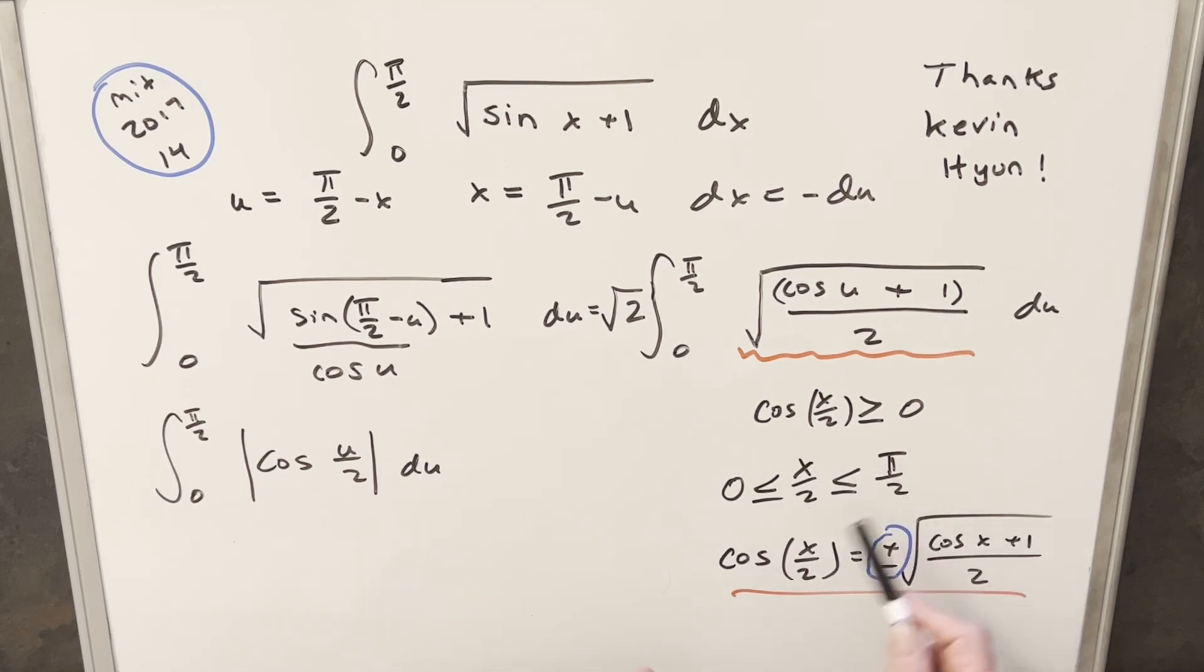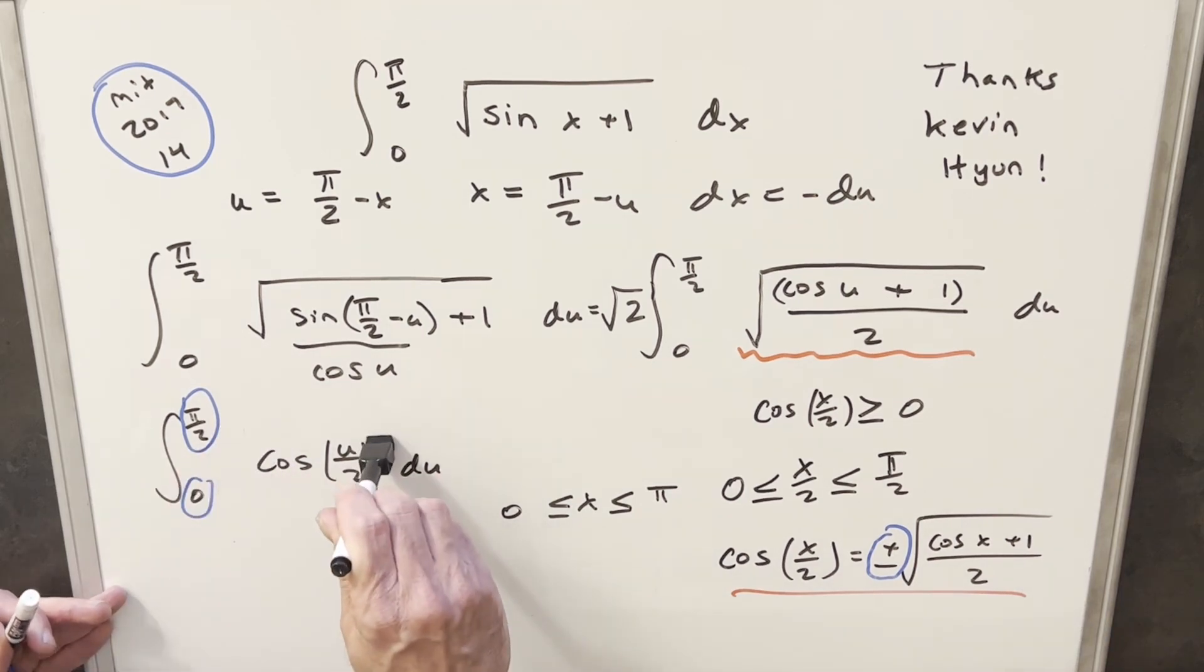But if I multiply through here by 2 on everything, we could also say that x is going to be less than or equal to pi and greater than or equal to 0. And so looking at our bounds, our bounds are between 0 and pi over 2, so we're definitely within this region right here. So what's going to happen here is this cosine expression, it's always going to be positive, and so we can just drop our absolute value sign. We don't have to worry about that.